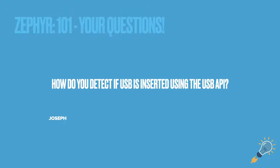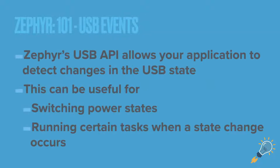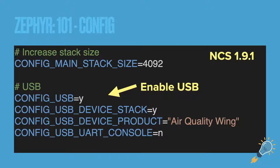Joseph's question is: how do you detect if USB is inserted using the USB API? The USB API does allow you to detect changes — basically anything that causes a status change. There are multiple different statuses. This can be useful for switching power states: for instance, if you are hooked to USB you might turn off the power supply, or you may want something to happen when USB is inserted or when a USB error occurs.